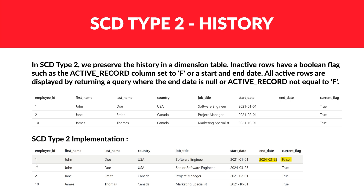Looking at the table, both rows share employee ID 1. The previous record has an expiration end date, meaning it's no longer valid. The current record has no end date and its flag is true, making it the active record. In SCD Type 2, we preserve history — that's the key concept.